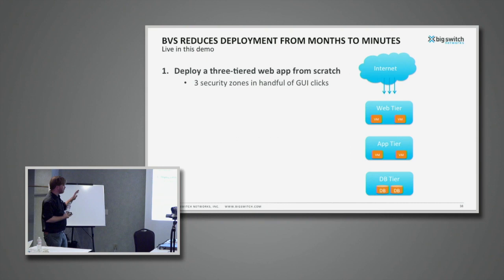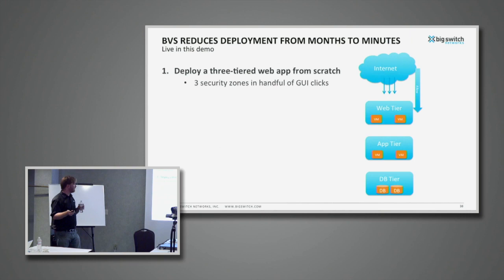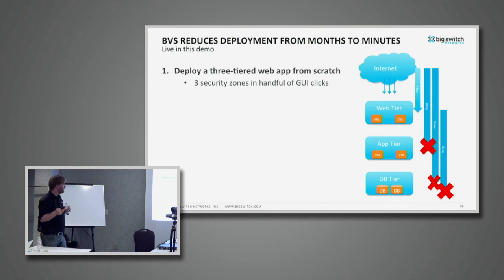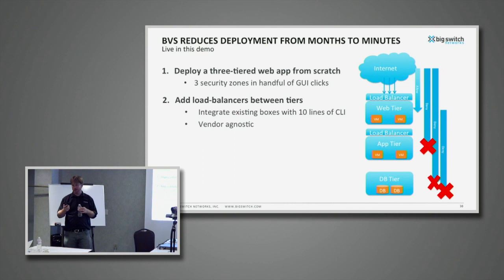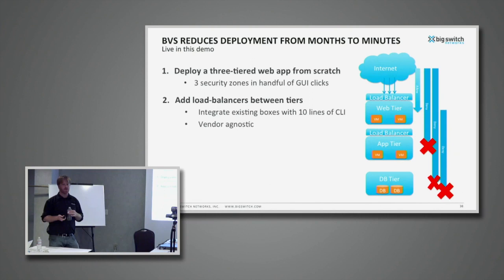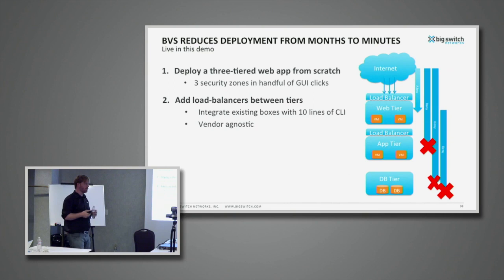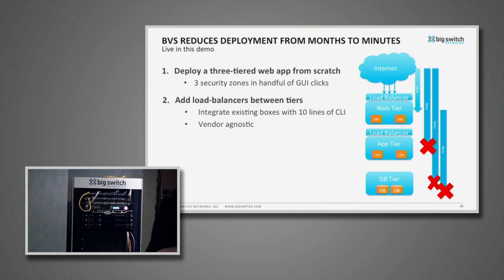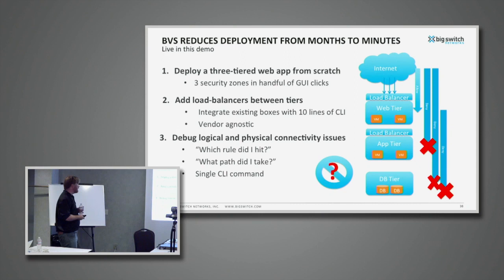The demo I'm going to show uses OpenStack. People said it takes months to do this — in minutes I'm actually going to pop up three different web tiers with a bunch of VMs, isolated by the following security policies: the internet can reach the web tier but not the app or DB tiers, and the web tier can't talk to the DB tier. We'll also throw in some load balancers. We have an F5 box in the rack — we're vendor agnostic in principle, but for configuration we're working with OpenStack and others on a roughly vendor-agnostic API. For debugging, we have a 'test packet' command that shows path and policy information pulled dynamically from the network.